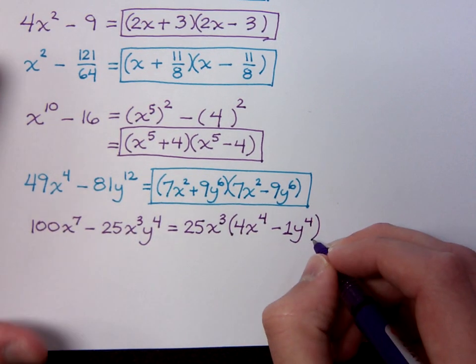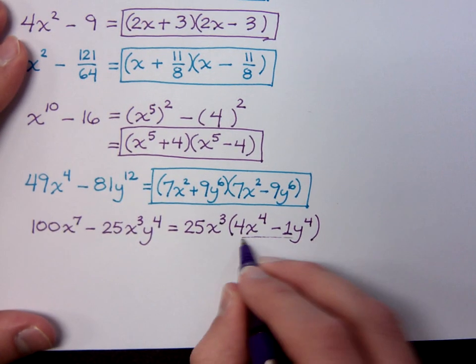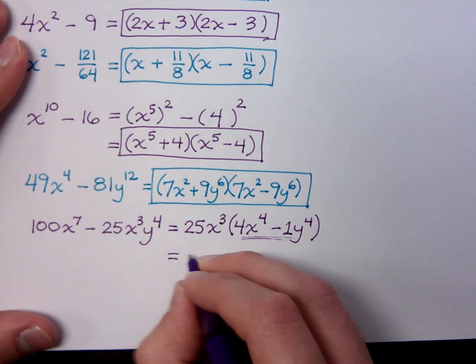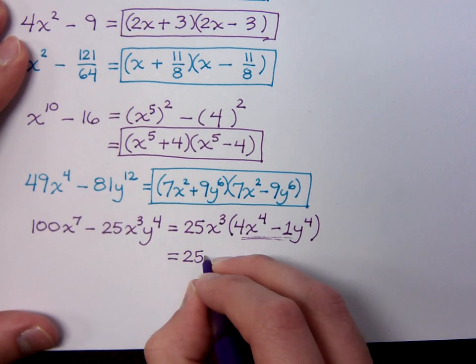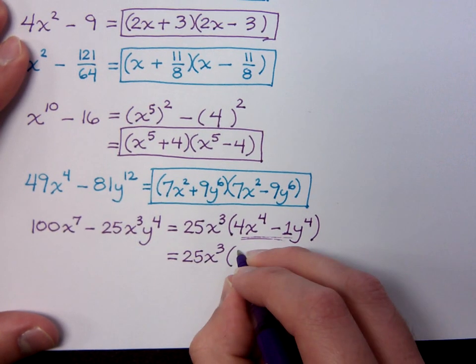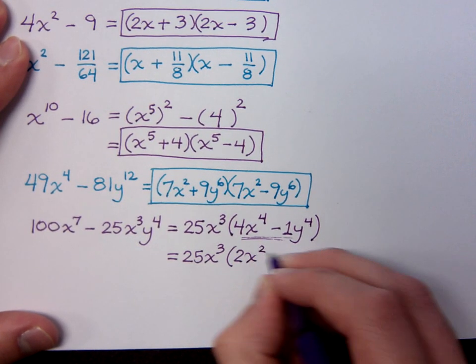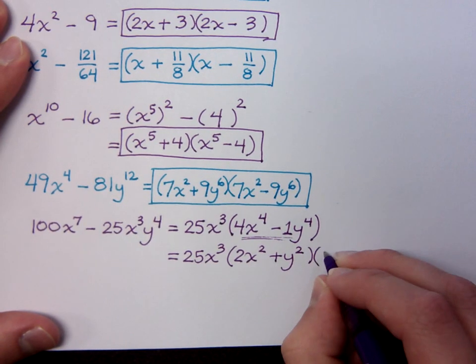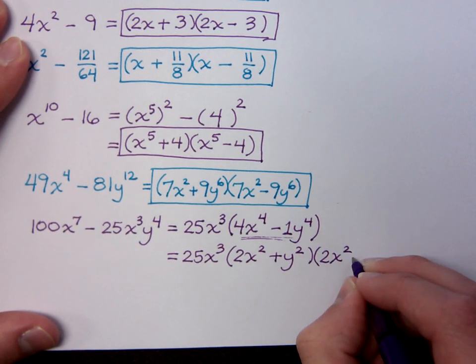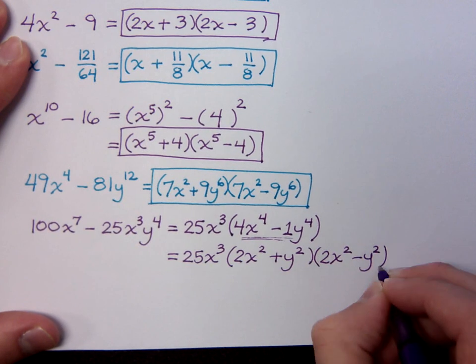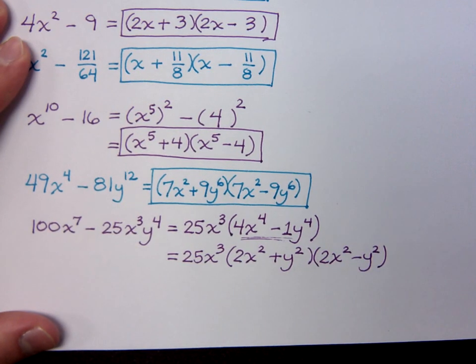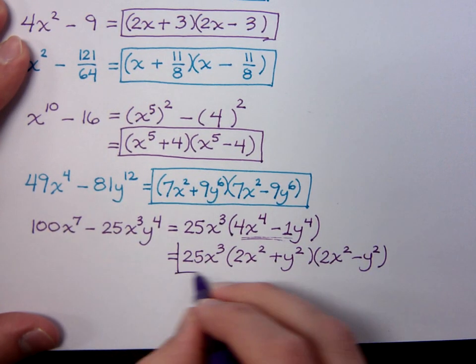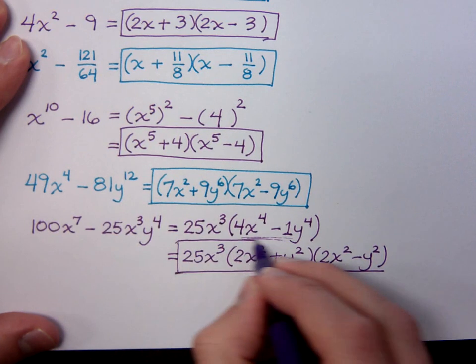Now when you look at what's inside here, this guy is the difference of squares. So my common factor is still here. And this guy would break down as 2x² + y² and 2x² - y². So always look for that GCF. Always.